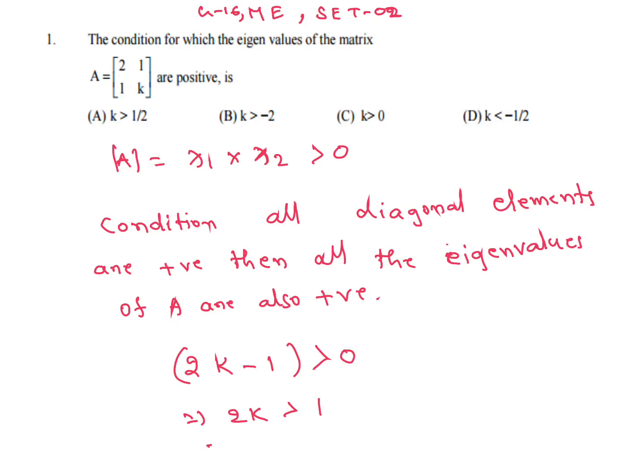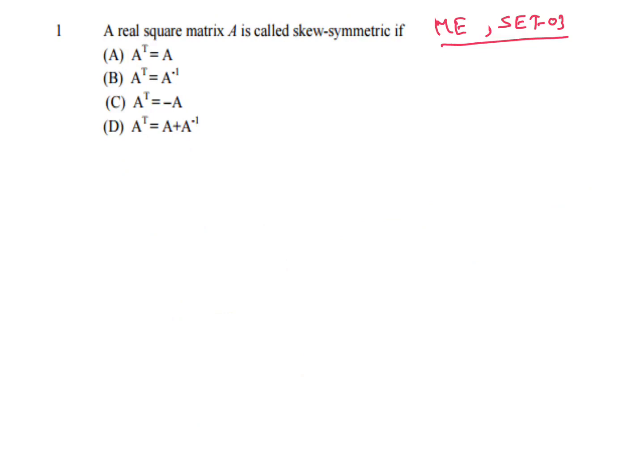This is GATE 2016 Mechanical Set 3, directly from properties of matrices. A real square matrix A is called skew-symmetric if A transpose equals minus A, or equivalently A = −Aᵀ. For symmetric matrix: A = Aᵀ. For skew-symmetric matrix: Aᵀ = −A. C is our answer.